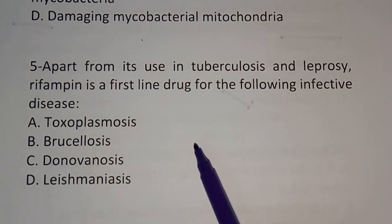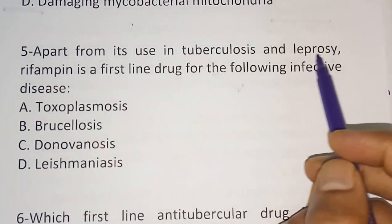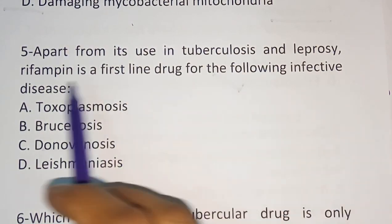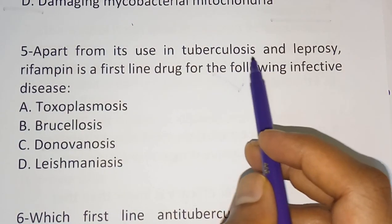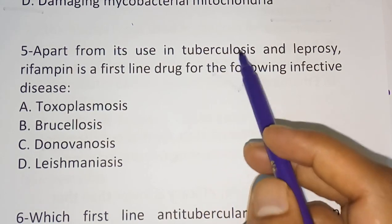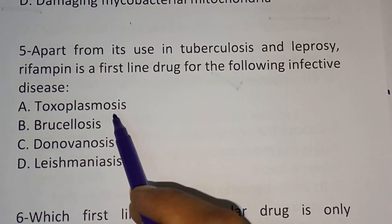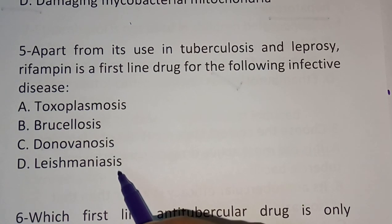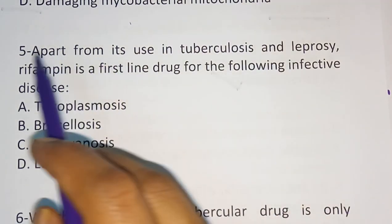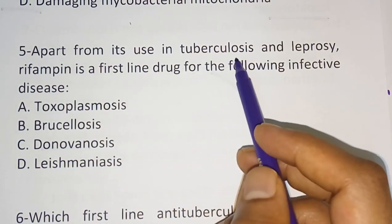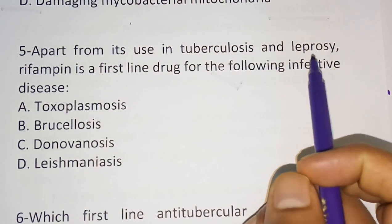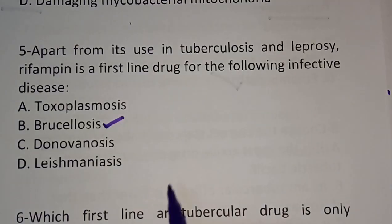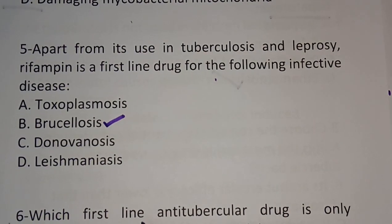Question number 5: apart from the use in tuberculosis and leprosy, rifampicin is a first-line drug for which of the following infective diseases? Options are: toxoplasmosis, brucellosis, donovanosis, and leishmaniasis. The correct answer is option B — brucellosis. Rifampicin can also be used in cases of brucellosis.